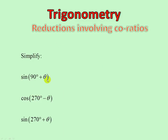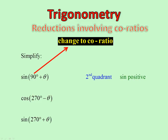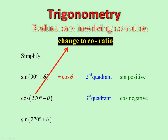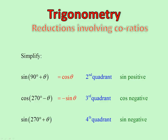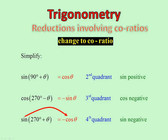More simplification: 90 plus theta — second quadrant, sin positive, does it change? Yes. Therefore cos theta. Cos of 270 minus: go to 270 back a bit, third quadrant, cos negative, change to co-ratio, yes. Negative sin theta. Cos of 270 plus theta: fourth quadrant, cos positive — but wait, does it change? Yes, attached to 270. Positive, change to co-ratio, therefore sin theta. But with correct sign: negative sin theta.